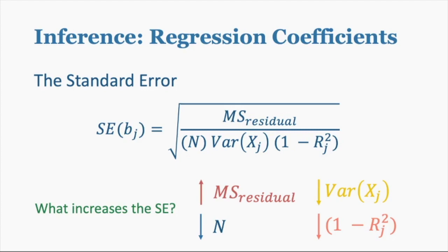The last factor is that a smaller tolerance increases the SE. The MS residual, the variance of X, and the sample size N are really important for understanding how to increase certainty or decrease uncertainty in your model. We're going to redefine tolerance in a way that's a little easier to understand — so don't focus on it too much here.